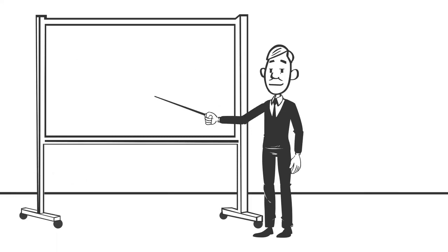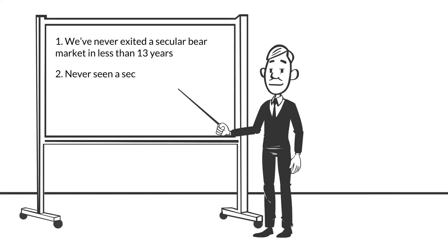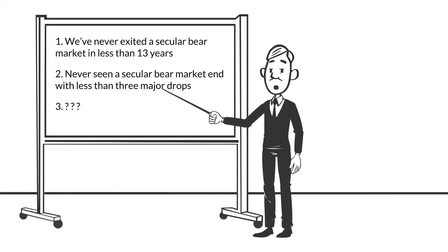But that wasn't the only reason. They also believe this to be the case because every zero growth period we've seen in history has had at least three major drops. We've never recovered from a long-term bear market cycle until after the market has experienced at least three major drops and recoveries, and we had only experienced two between 2000 and 2013.